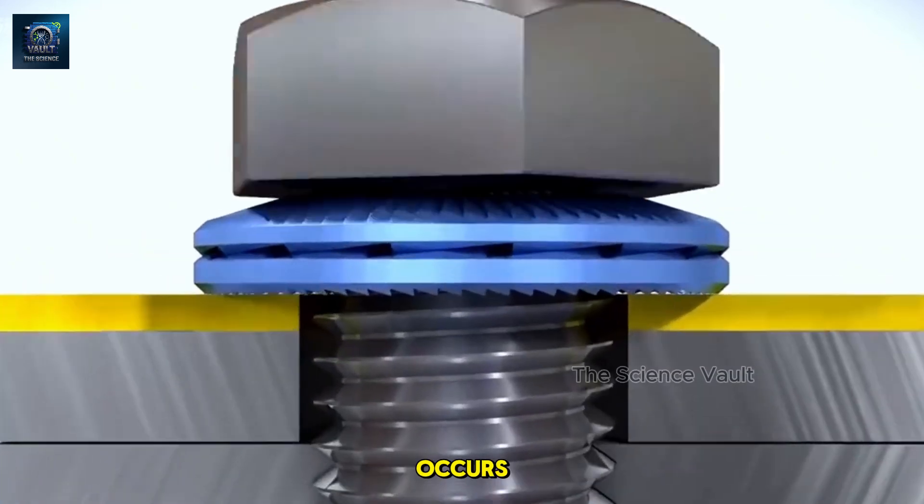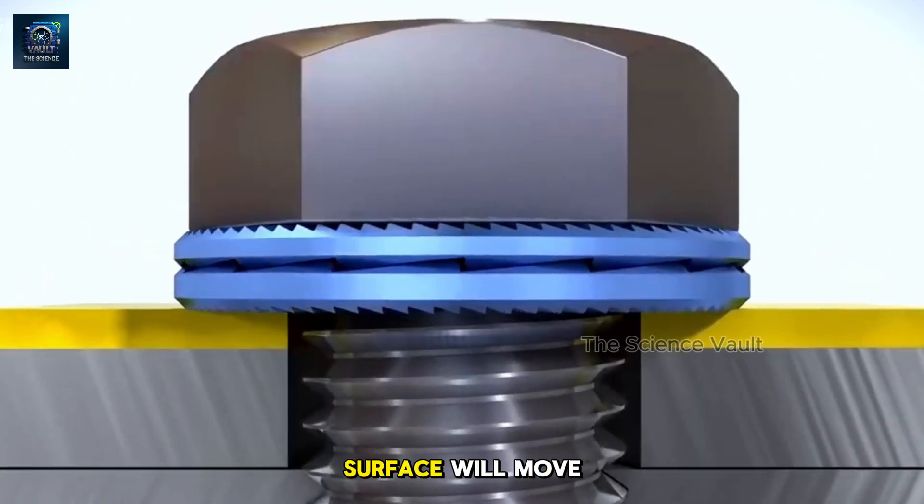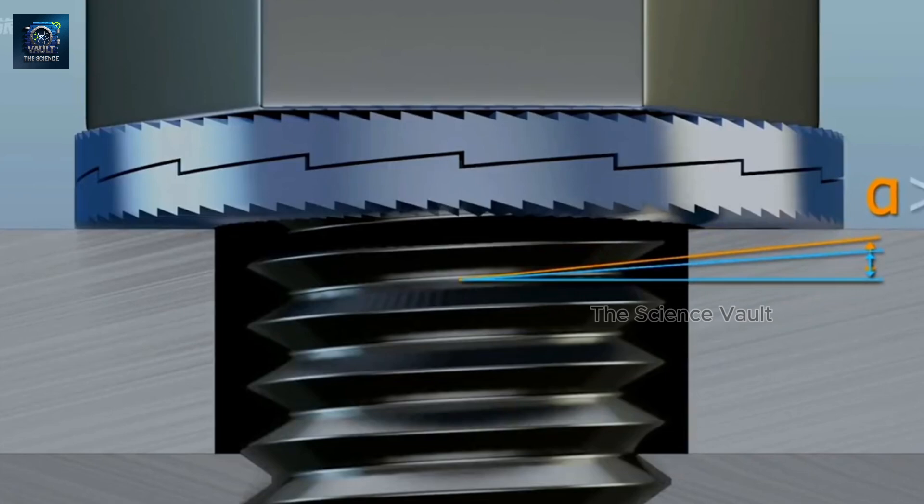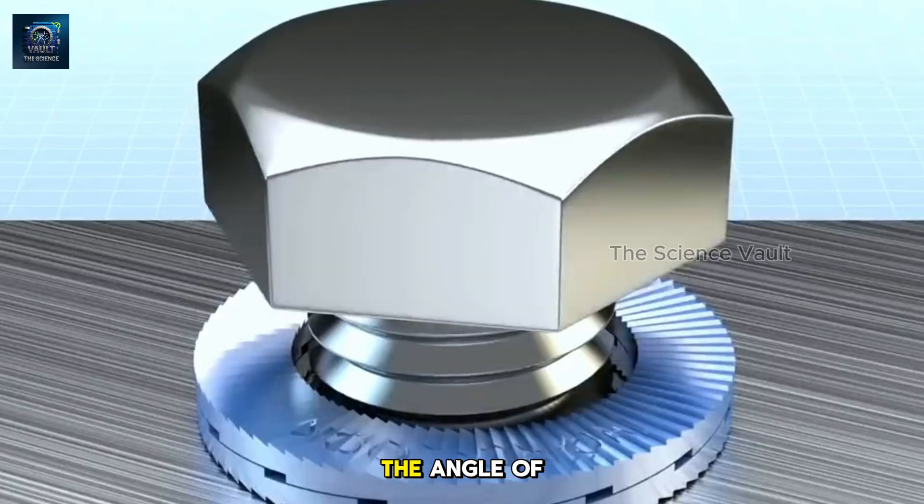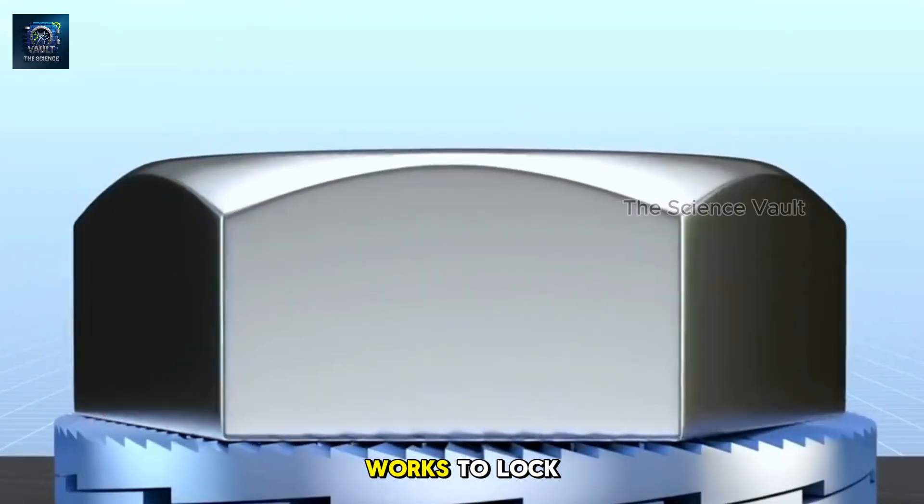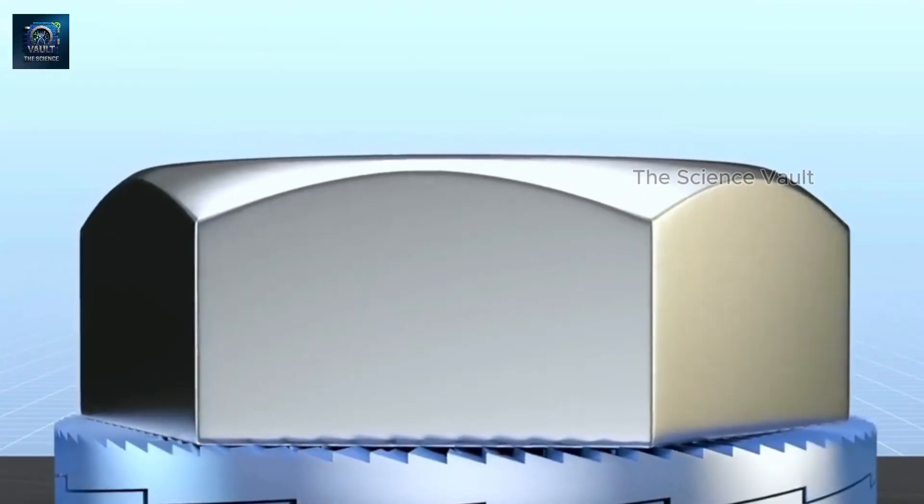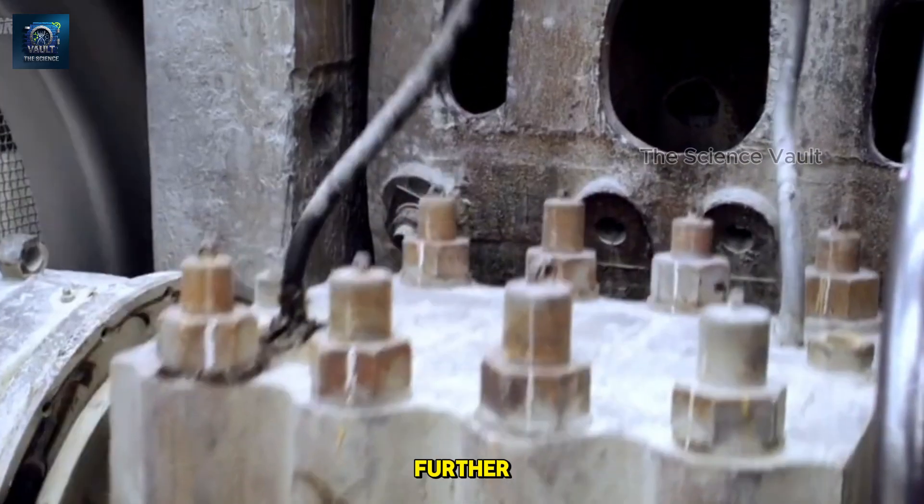When vibration occurs, the large tooth surface will move. And by the Nord lock, where the friction angle is greater than the angle of the nut, anti-loosening washer works to lock the bolt, making it impossible to loosen any further.